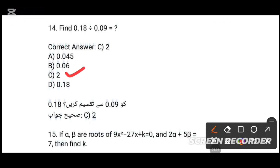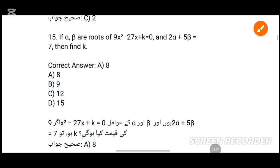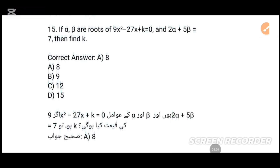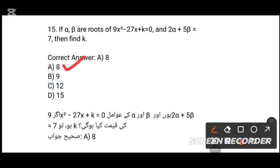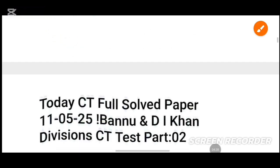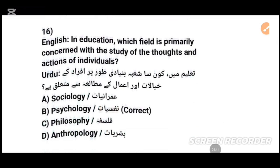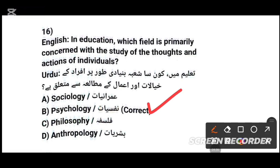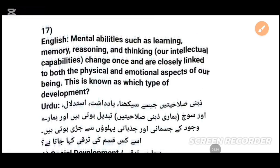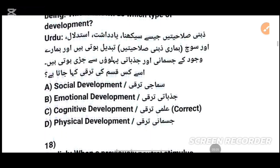MCQs number 15: If beta, our roots of 9x squared — the answer is option A. MCQs number 16: In education, which one is probably served in the study of arts and the action of the individual. MCQs number 17: Mental abilities such as learning, building — tick the character — the answer is cognitive development.